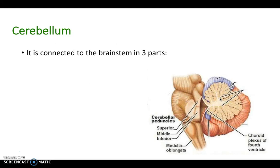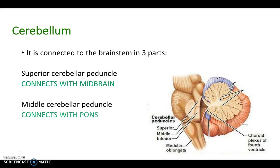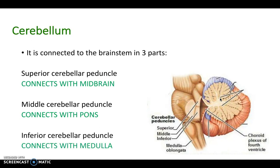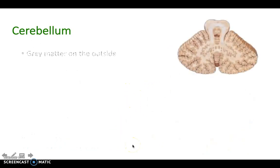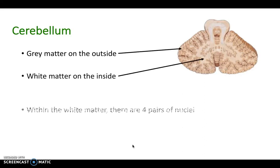The cerebellum is connected to the brainstem in three parts called peduncles: the superior cerebellar peduncle connecting with the midbrain, the middle cerebellar peduncle connecting with the pons, and the inferior peduncle connecting with the medulla — which makes sense as you go down through midbrain, pons, and medulla oblongata.